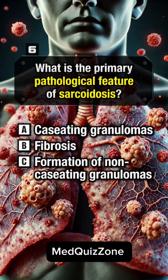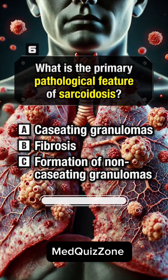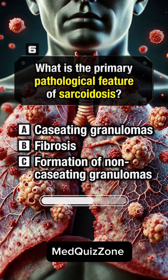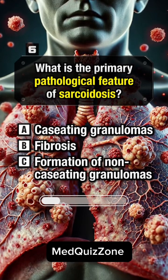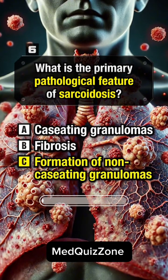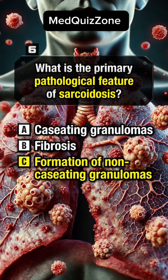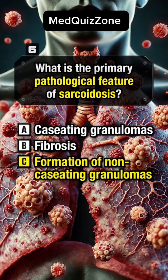What is the primary pathological feature of sarcoidosis? Answer C, formation of non-caseating granulomas.